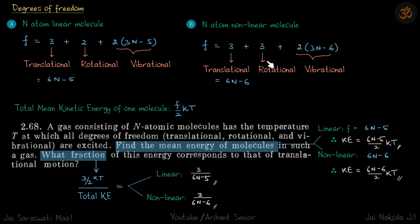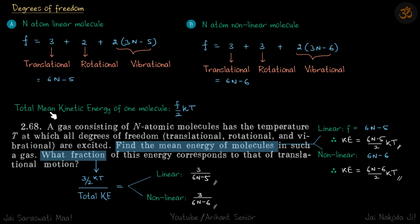For an n-atom non-linear molecule, translational degrees are still three, rotational are three (one more than linear), and vibrational is (3n - 6). On simplification, total degrees of freedom become (6n - 5) for linear and (6n - 6) for non-linear. The total mean kinetic energy of one molecule is given by (f/2) * kT.